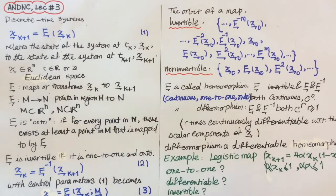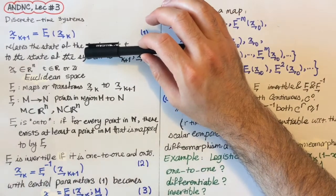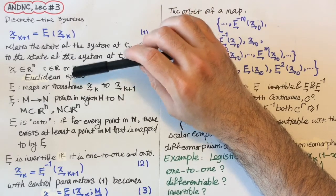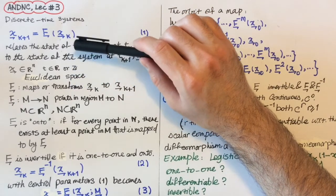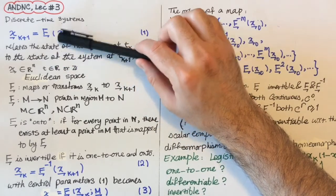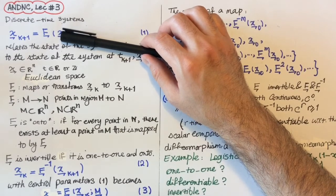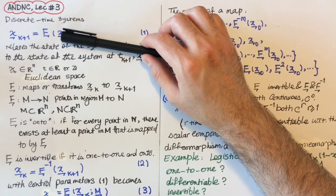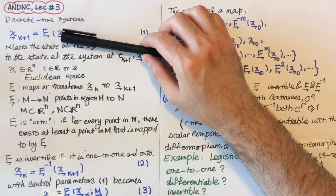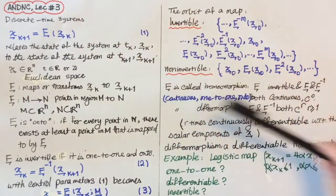Before I go further, I need to explain something here. If you look at Nayfeh and Balachandran's nonlinear dynamics, they say x belongs to R^n, the Euclidean space, which is also equipped with two norm, which is how we compute the magnitude of x.